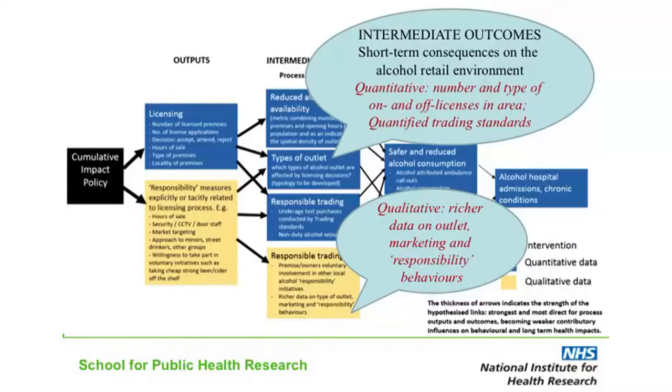Moving on to intermediate outcomes: assuming the intervention did indeed make some changes to the types or number of alcohol licenses being granted in local areas, the next question is what impact did that have beyond licensing itself? We've decided to frame intermediate outcomes as what changes this made to the high street. Licenses are about giving shops and off-licences and on-licences the legal right to serve alcohol, so if there's been a change to licensing, we want to see whether that's changed how alcohol is sold on the high street within a local area — and we can look at that in both quantitative and qualitative terms.